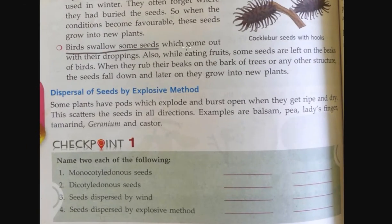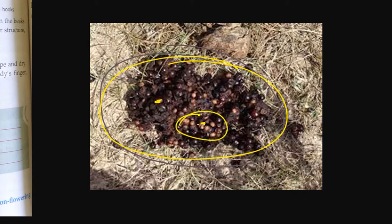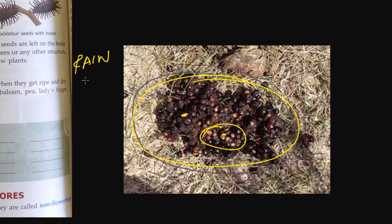Birds swallow some seeds which come out with their droppings. Look at these small seeds — the seeds are in the droppings and they start growing. When favorable conditions like rain and sunlight are present, these seeds also grow into plants. This is how birds help in dispersal of seeds.